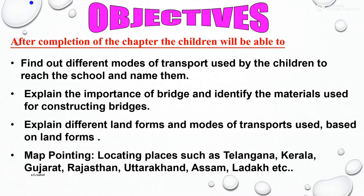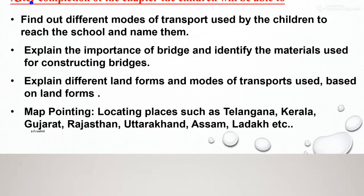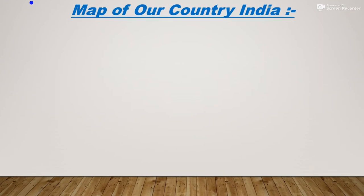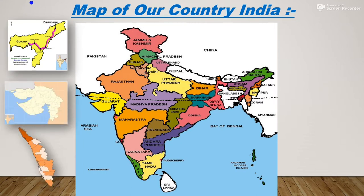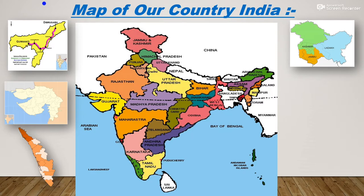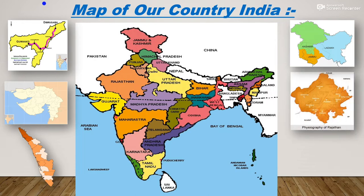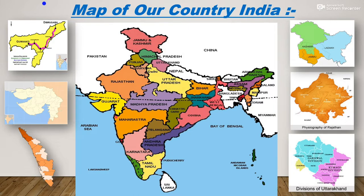In map pointing we will locate some places in our country's map — the map of India. There are different states and union territories in our country. The first is Assam, whose capital is Guwahati. The second is Gujarat. The third is Kerala. The fourth is Jammu, Kashmir and Ladakh. Next is Rajasthan, which is the largest state, and then Uttarakhand.